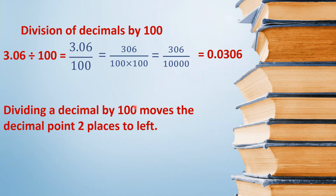इसका मतलब यह हुआ कि dividing a decimal by 100 moves the decimal point two places to the left. यानि जब भी हम 100 से किसी भी नंबर को divide करते हैं, तो decimal left की तरफ two places move हो जाता है. यहाँ two decimal places थे और यहाँ four decimal places हैं — यानि two places move हो गया left की तरफ.